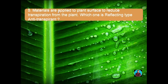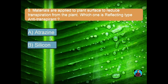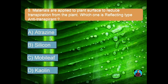Tilling refers to mechanical preparation of soil for planting and cultivation. Question number five: materials applied to the plant surface to reduce transpiration — which one is the reflecting type of antitranspirant? Option A: Atrazine, Option B: Silicon, Option C: Mobile leaf, Option D: Kaolin. The right answer is kaolin. Atrazine is a stomatal-closing type; silicon and mobile leaf are film-forming types.